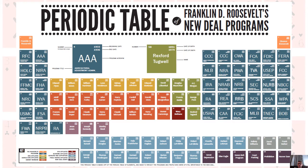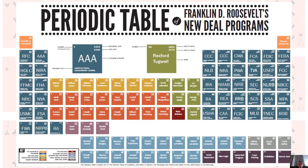Other folks have created a periodic table of the New Deal, showing each New Deal act with its start and end dates and the leading persons in charge of each program. It looks cool and is kind of clever, but it doesn't really tell you much. The actual periodic table has its own internal logic — going from top to bottom, left to right means something. So this is really just a gimmicky, pretty thing to look at.